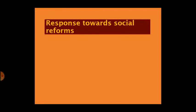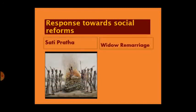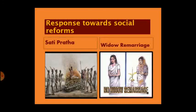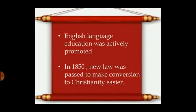Let us understand the responses towards social reform. The British believed that Indian society had to be reformed. There were various social evils existing in the country, like Sati Pratha and the ban on widow remarriage. Laws were passed to stop the practice of Sati and to encourage the remarriage of widows. English language education was actively promoted after 1830. The company allowed Christian missionaries to function freely, own land, and property. In 1850, a new law was passed making conversion to Christianity easier and allowing converts to inherit the property of their ancestors.